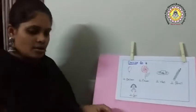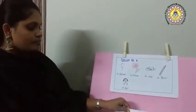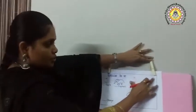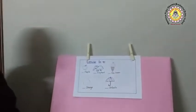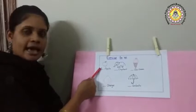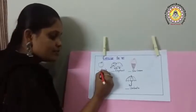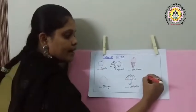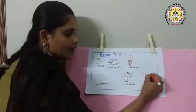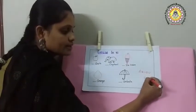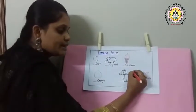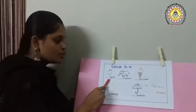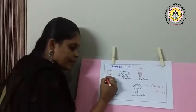Now coming to the next exercise on AN. Tell me children, what are the vowels? Vowels are A, E, I, O, U. See the pictures here. What does the first picture look like? Apple. In the word apple, what is the first letter? A. We know that A, E, I, O, U are vowels, and in front of vowels, what do we get? AN. So we get: an apple.